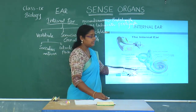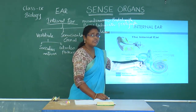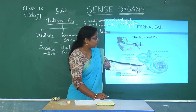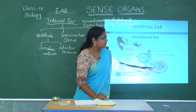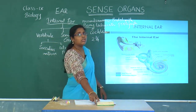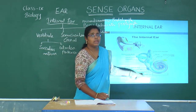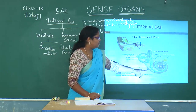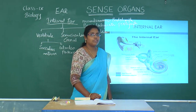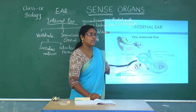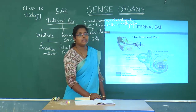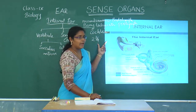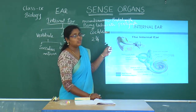The stapes connects at the upper window called the oval window, transmitting the stimulus to the internal ear. The lower window is called the round window. The cochlea makes approximately 2¾ turns and is separated into three chambers.